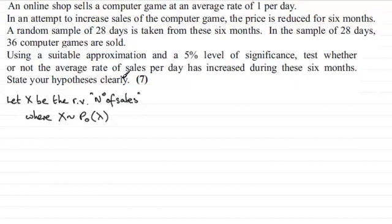We've got to state our hypothesis clearly here. For my null hypothesis, if nothing has changed, we're going to have that the mean, because it's one per day and we're looking at 28 days, we'd expect to have a mean number of sales of 28. So the null hypothesis: lambda equals 28.